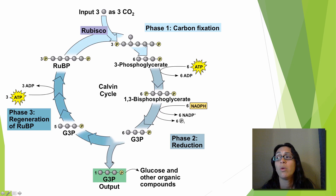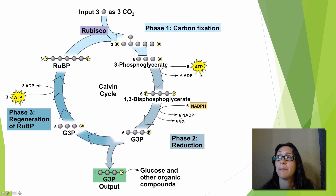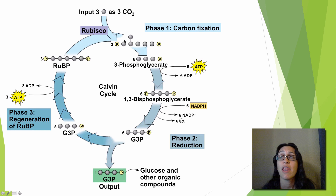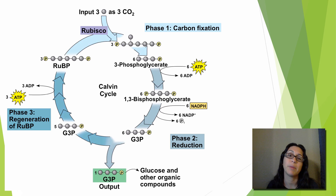One G3P leaves the cycle; the other G3Ps are used to regenerate your RuBP so the cycle can go over and over again. Key parts to remember are your RuBP, your Rubisco, and carbon dioxide. That gets you the goal of the Calvin cycle — your G3P, your sugar — which can be used for many things afterwards, including making glucose.